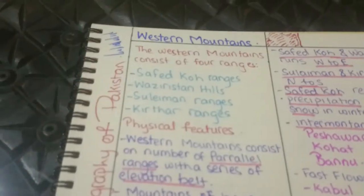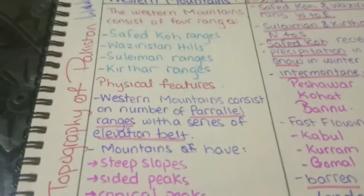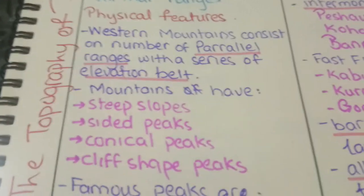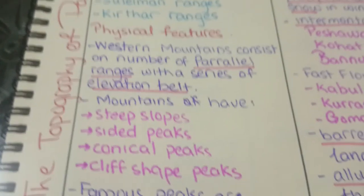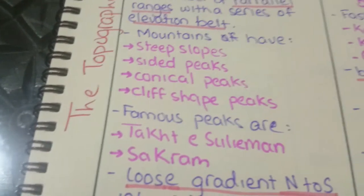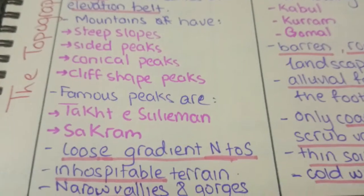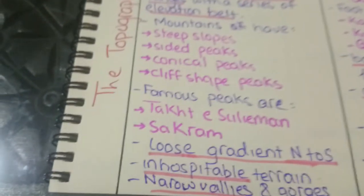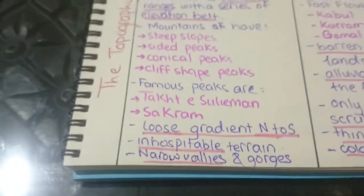The Western Mountains consist of four ranges: Sufaid Koh, Waziristan Hills, Suleiman Ranges, and Kirthar Ranges. Physical features consist of a number of parallel ranges and series of elevation belts. The mountains have steep slopes, sided peaks, conical peaks, and cliff-shaped peaks. Famous peaks are Takht-e-Suleiman and Sakram. They lose gradient from north to south and have inhospitable terrain, narrow valleys and gorges.